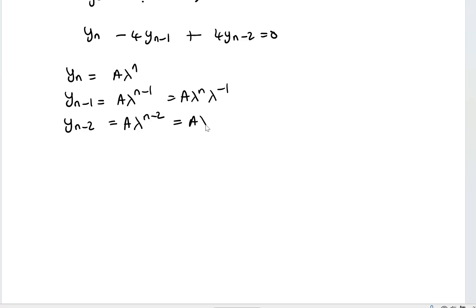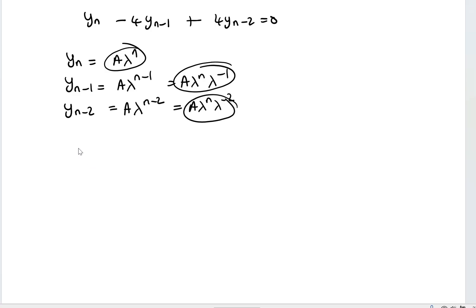And I will take these terms and put them on y sub n minus 1 and y sub n minus 2, respectively, in the given difference equation. If I do that, I'm going to have A lambda^n minus 4A lambda^n lambda^(-1) plus 4A lambda^n lambda^(-2), and this is equal to 0.